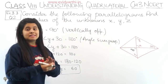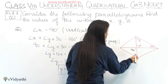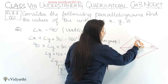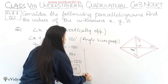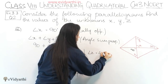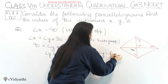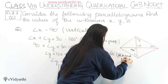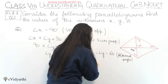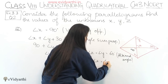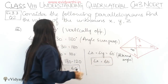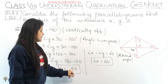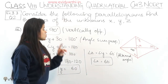Now we have x and y. For z: angle z = angle y because they are alternate angles. So z = 60°. Therefore x = 90°, y = 60°, and z = 60°. This was part number 3.